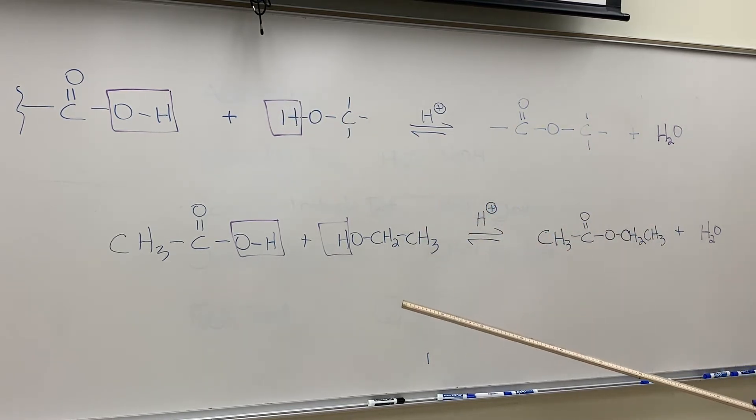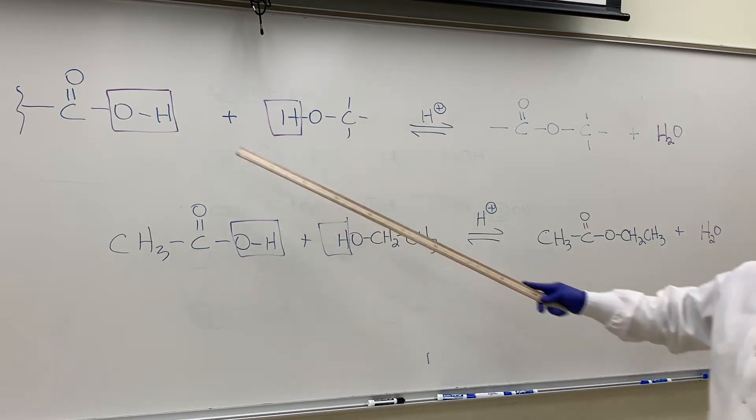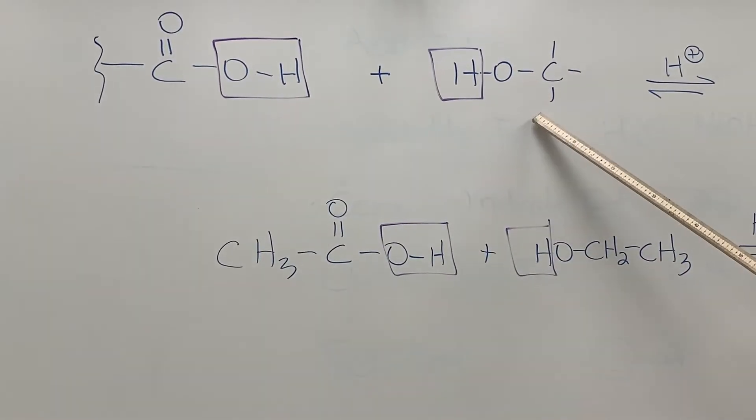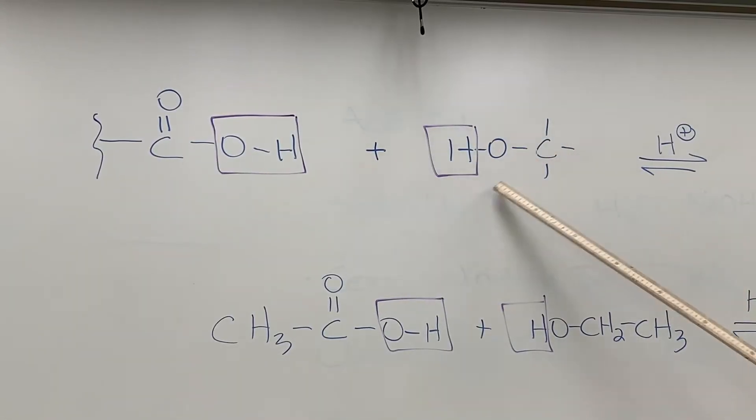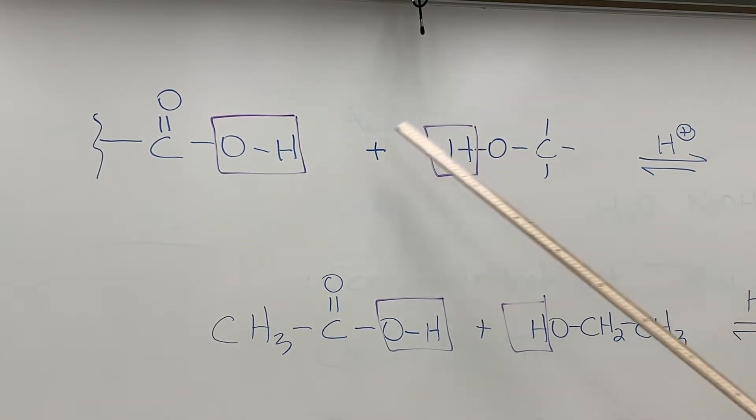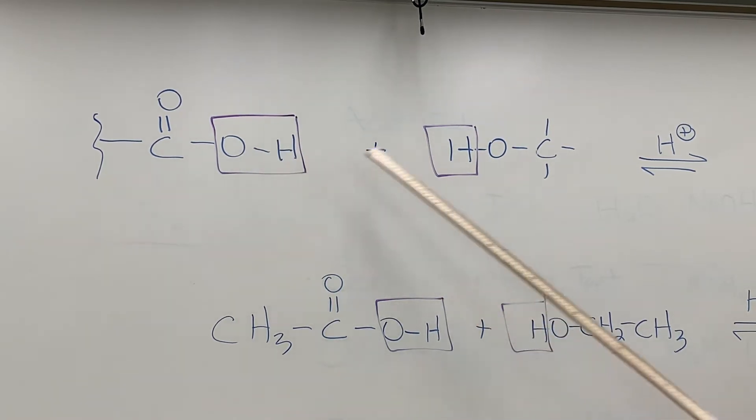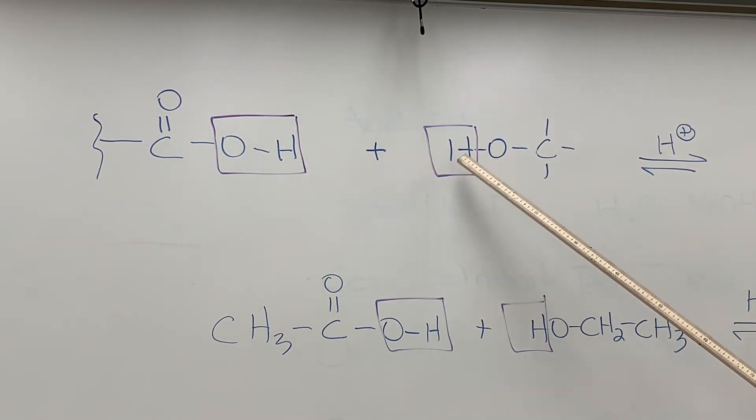What happens in an esterification reaction: if you take a carboxylic acid which has this functional group, the carboxyl group, and you react it with an alcohol which has the functional group OH, you're going to split out water between the two molecules. You'll always remove the OH group from the carboxyl group and the hydrogen from the alcohol to form the water.